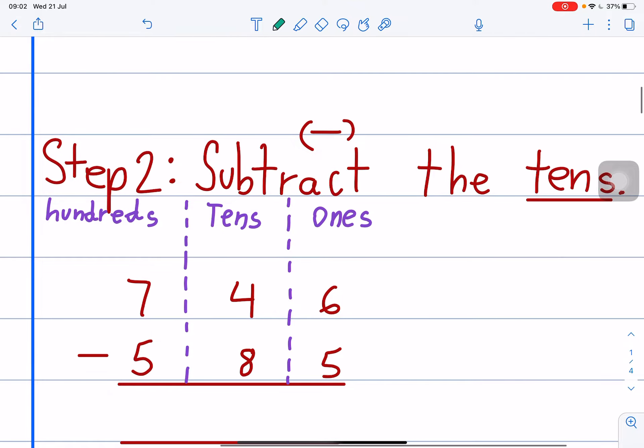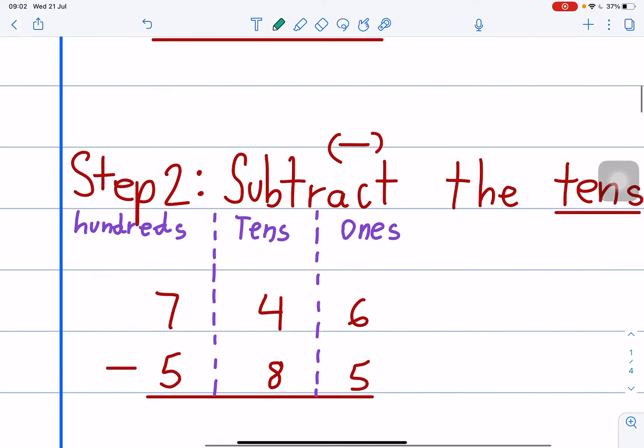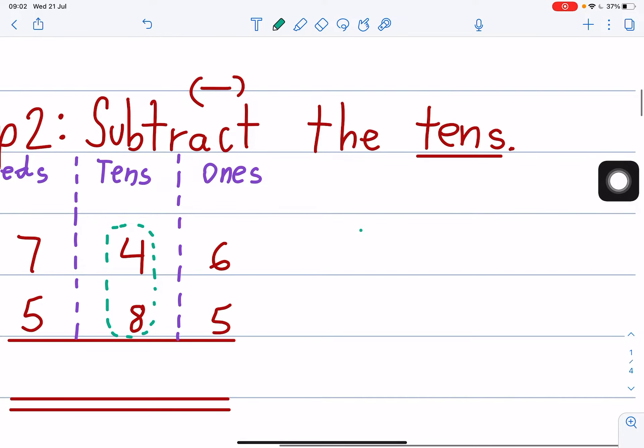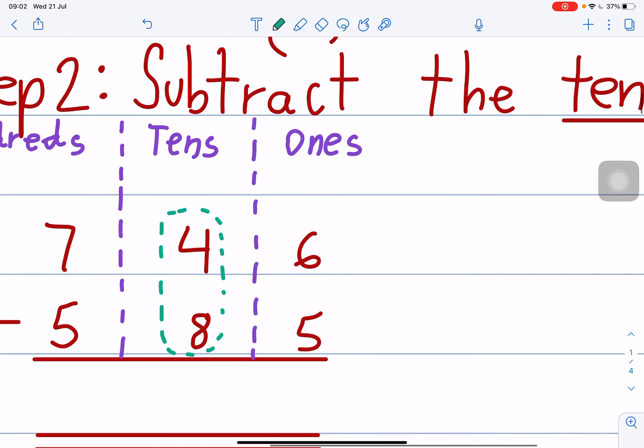Step 2, now, subtract the tens. Subtract the tens here. Tens is here. Minus tens. So, 4 minus 8. Can we do 4 minus 8 like this or like this? 4 minus 8. Cannot. So, 4 minus 8 is you cut 4. Cut 4 and then here becomes 14. Put number 1 here and put number 4 here. You put number 1 here. 14.